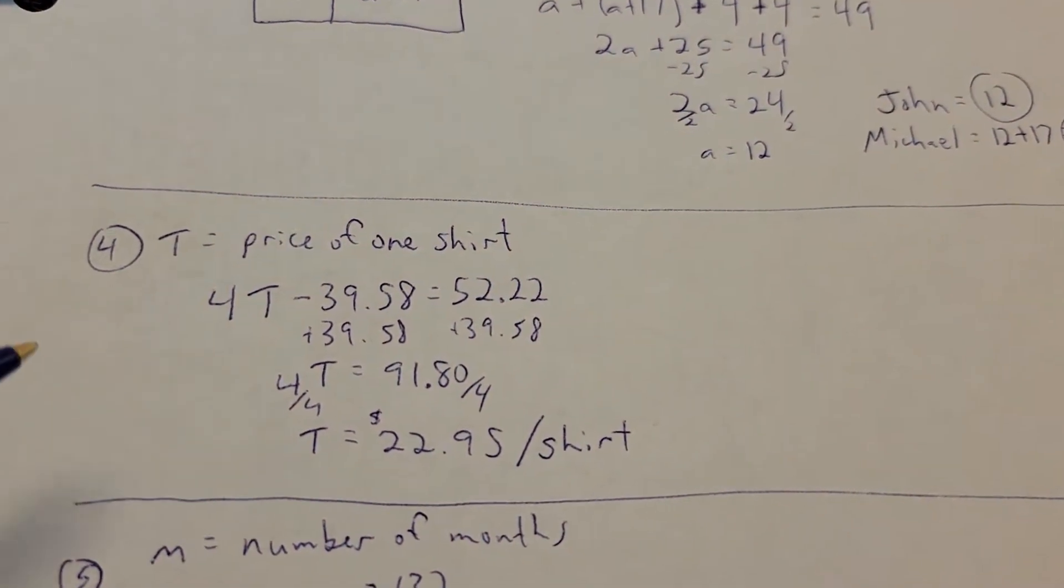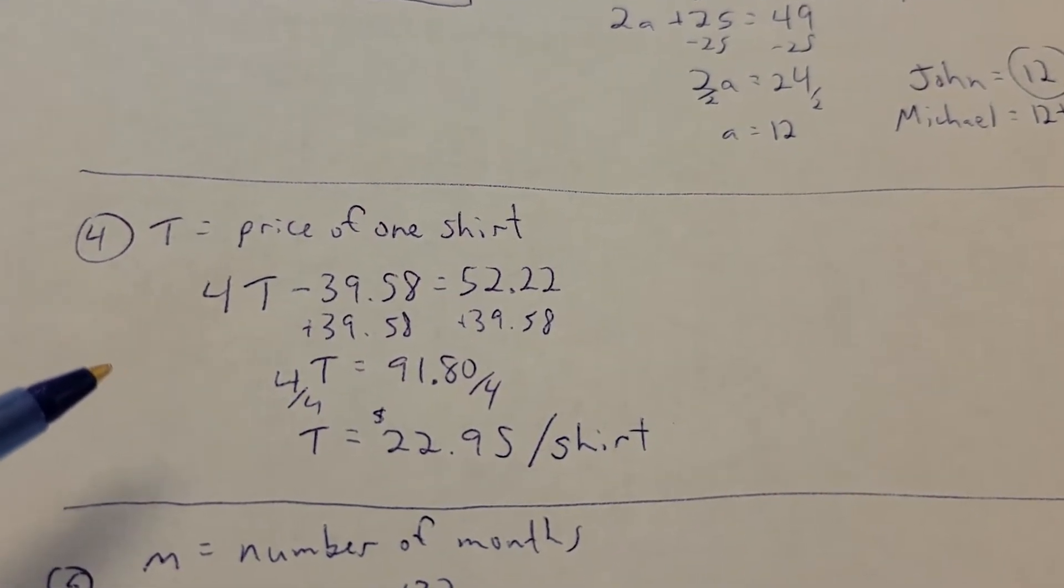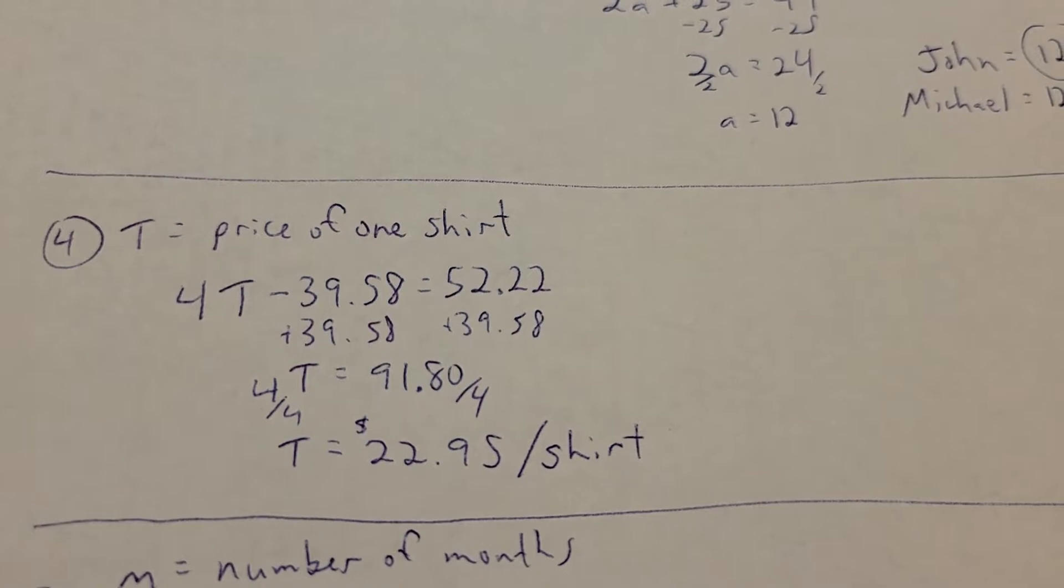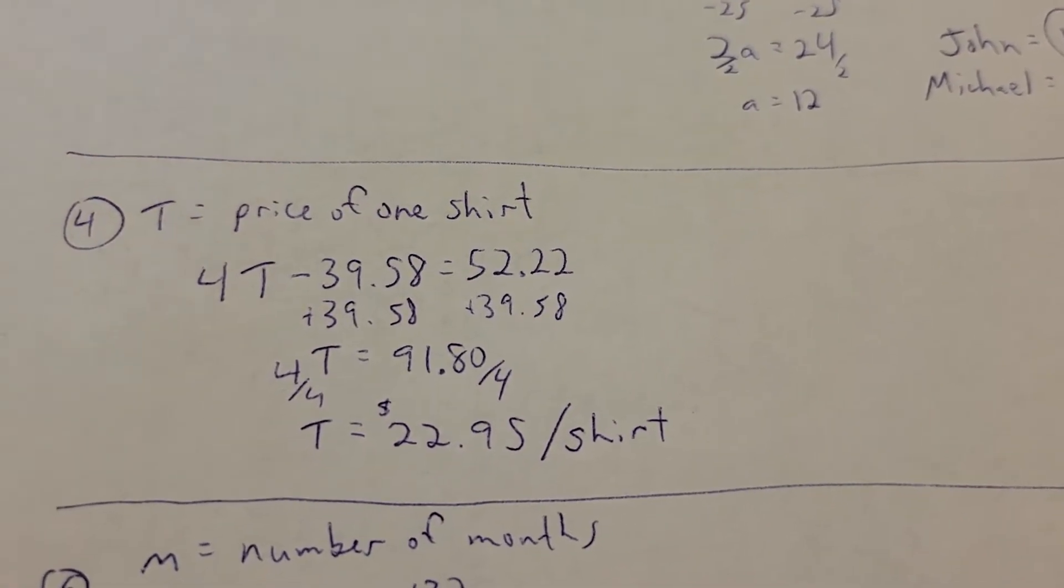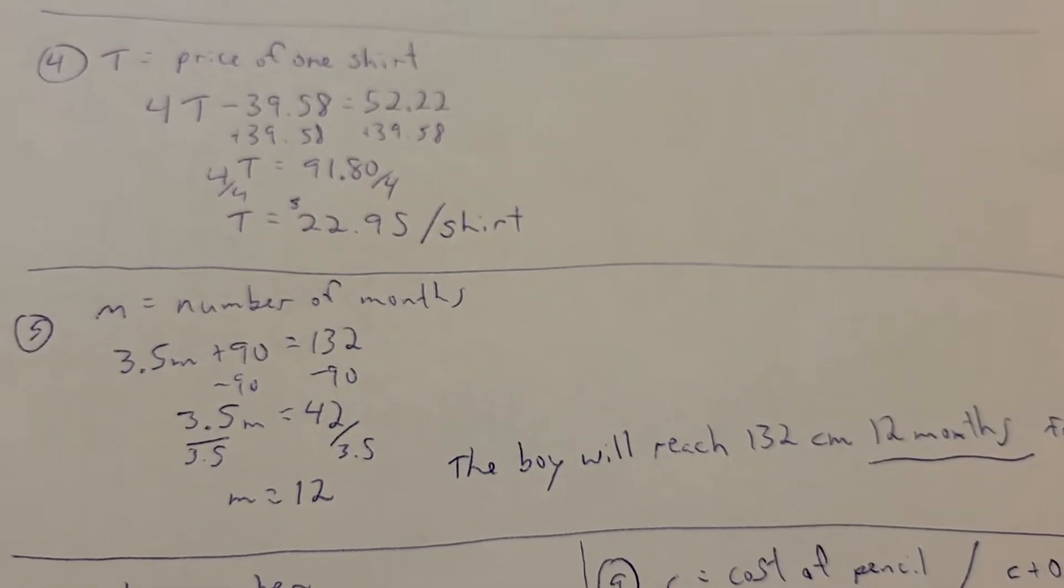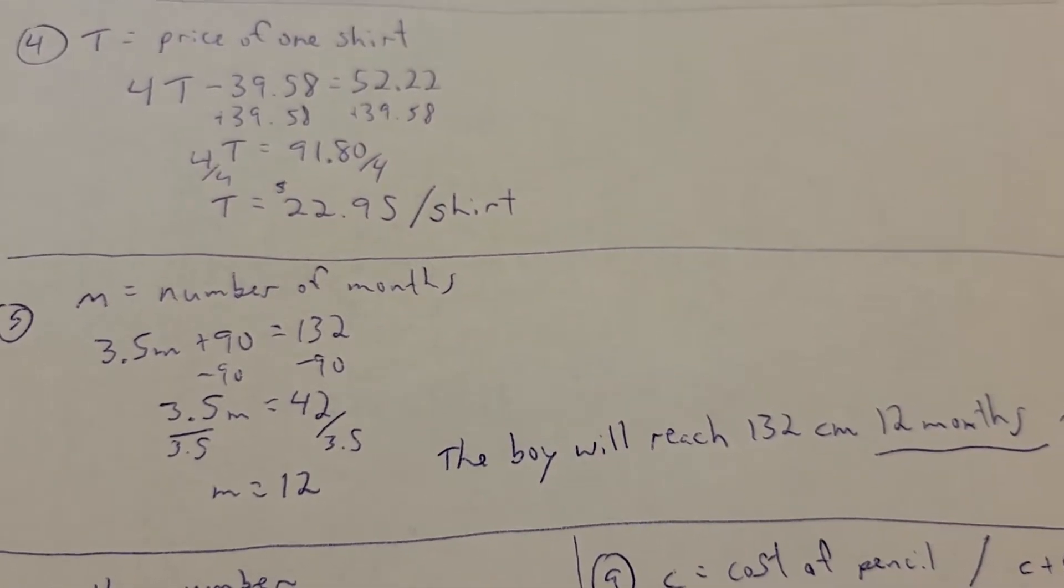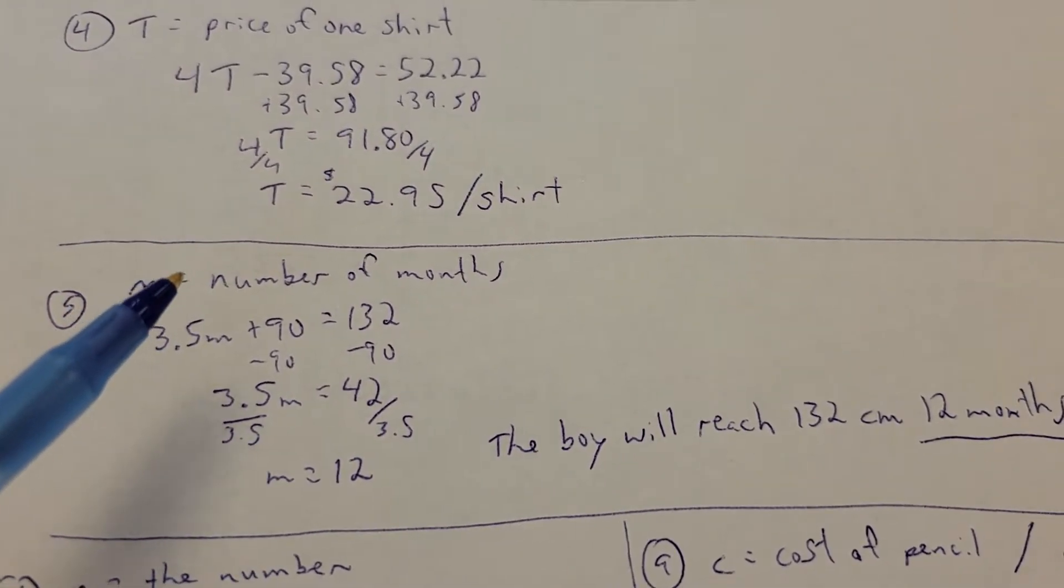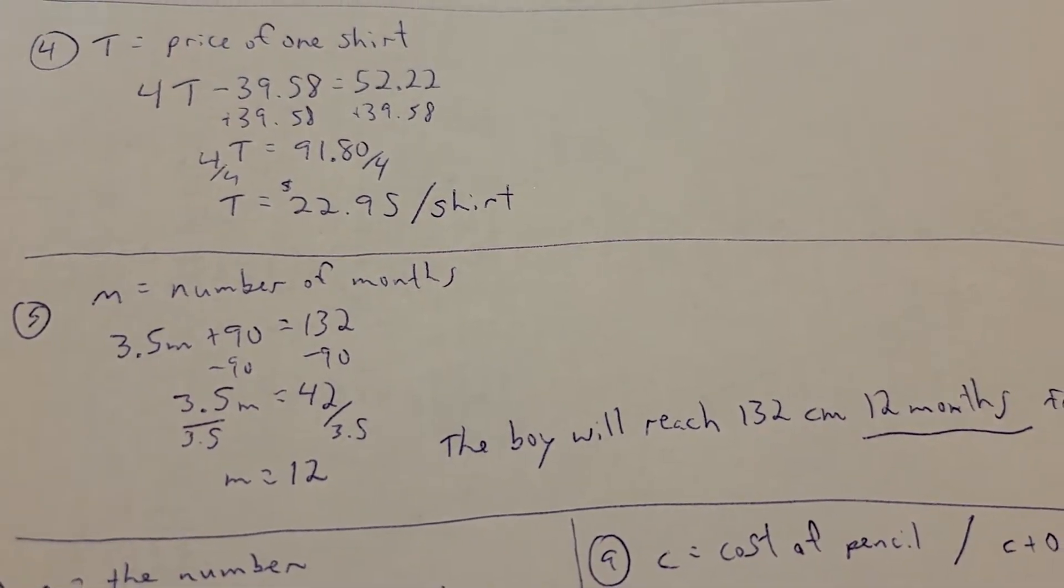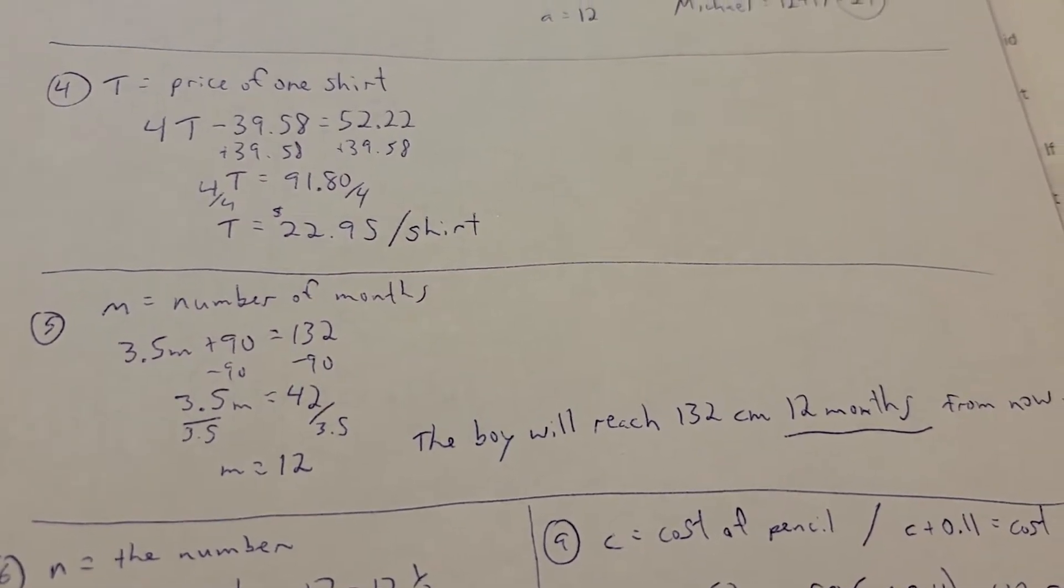Number 4, you had to figure out kind of the price of what one shirt was going to end up being there. So, there's our setup there, and we can go ahead and use that for our cost per shirt. Number 5, we had to figure out how many months it was going to take for the kid to reach a certain height. So, M stood for that number of months. And you can see as we follow the setup, it ended up being 12 months from now.